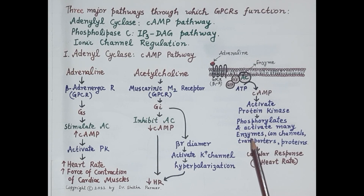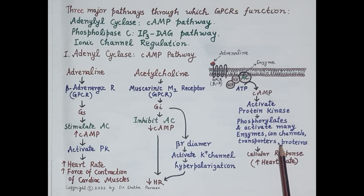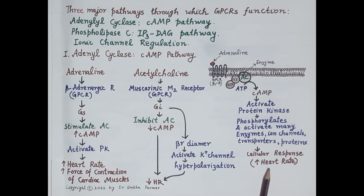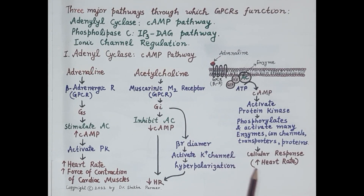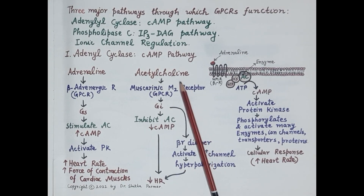Protein kinase phosphorylates and activates many enzymes, ion channels, transporters, and structural proteins within the cell, amplifying and transmitting the signal brought by adrenaline. For example, when adrenaline binds to beta-1 adrenergic receptors — a type of G protein coupled receptor — it produces an increase in heart rate and an increase in the force of contraction of cardiac muscles.